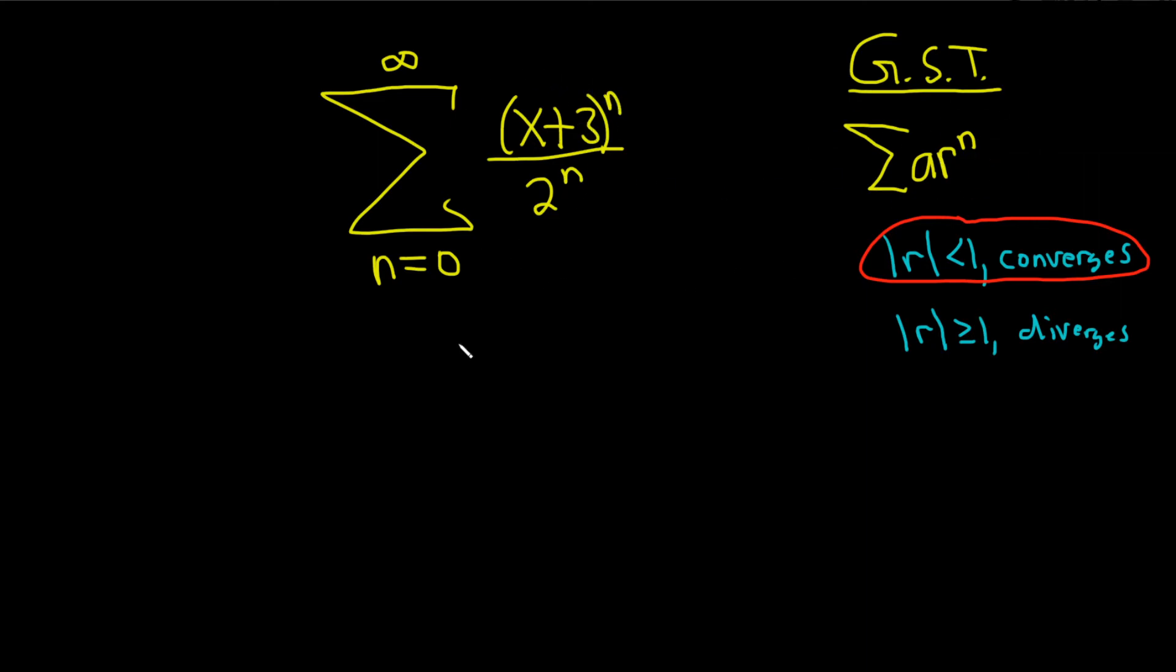So notice they're both to the nth power. So we can write this as the infinite sum as n runs from 0 to infinity. And we can write it as a single number, so (x+3)/2, and this whole thing is to the nth power.